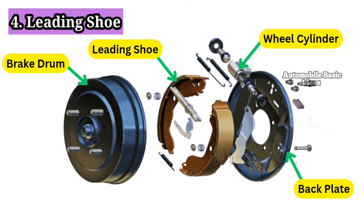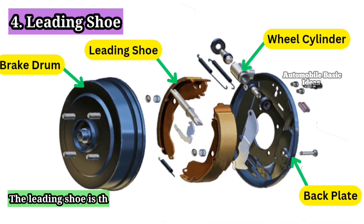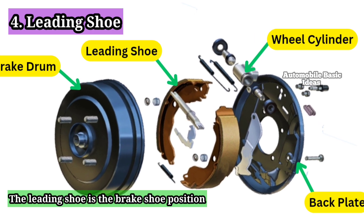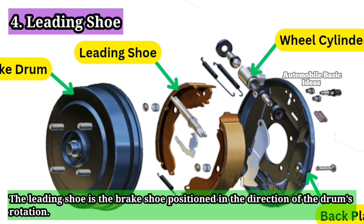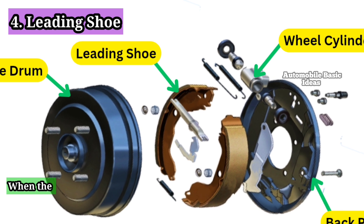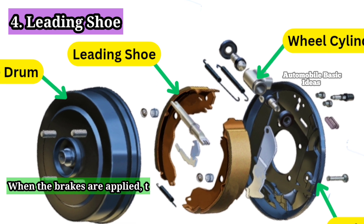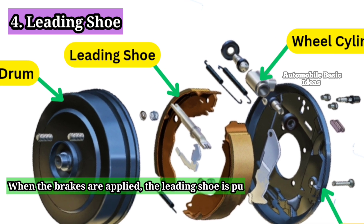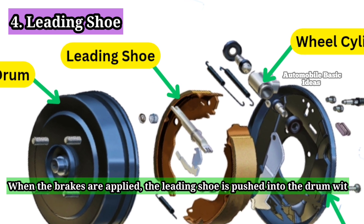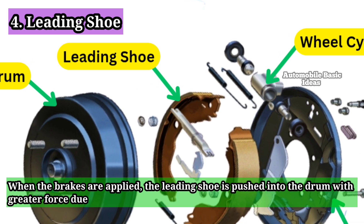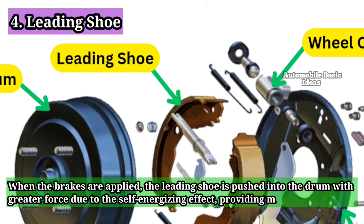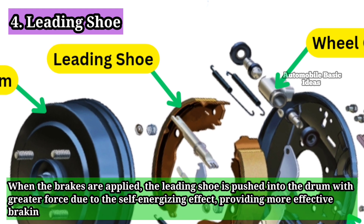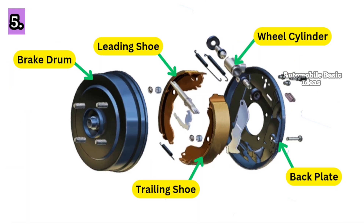4. Leading shoe. The leading shoe is the brake shoe positioned in the direction of the drum's rotation. When the brakes are applied, the leading shoe is pushed into the drum with greater force due to the self-energizing effect, providing more effective braking.